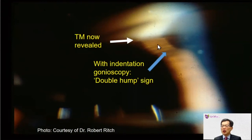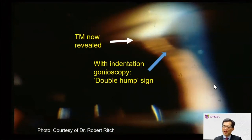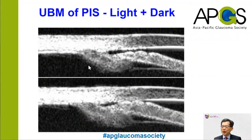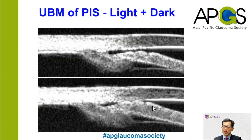The reason for the double hump is that the peripheral iris is draped over a very prominent and anteriorly positioned ciliary body, whereas the more central iris is draped over the anterior surface of a very prominent, thick, and anteriorly positioned lens. In an eye with plateau iris syndrome, after laser peripheral iridotomy, you can often see very prominent ciliary processes through the laser iridotomy. With UBM, you can see a very prominent and anteriorly rotated ciliary body pushing the iris towards the cornea, making the drainage angle very narrow in the light situation. In the dark situation, when the pupil is dilated, the peripheral iris bunches up and the narrow angle is completely closed off by the peripheral iris.